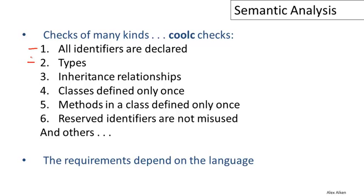There are a number of restrictions that come from the object-oriented nature of Cool. We have to check that the inheritance relationships between classes make sense. We don't want classes to be redefined. We only want one class definition per class. Similarly, methods should only be defined once within a class. Cool has a number of reserved identifiers, and we have to be careful that those aren't misused, and this is pretty typical.